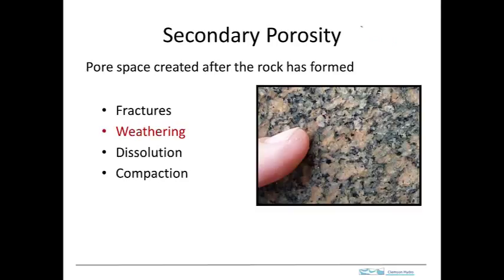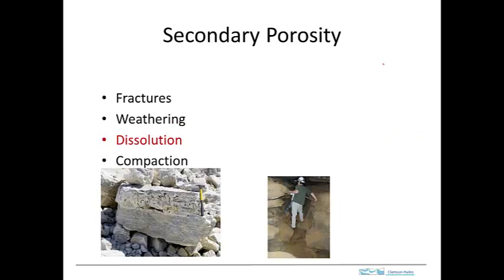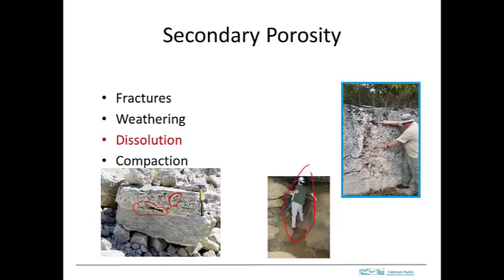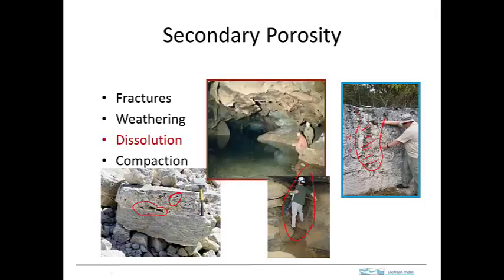Weathering also produces secondary porosity. In granite, feldspars are unstable at shallow depths, weathering to clay and dramatically increasing porosity. Dissolution also increases porosity, particularly in carbonates — here are small vugs and cavities dissolved in limestone, and a large conduit dissolved out. The Florida limestone that started with large primary porosity from organism structures has been further dissolved, creating a large secondary porosity.